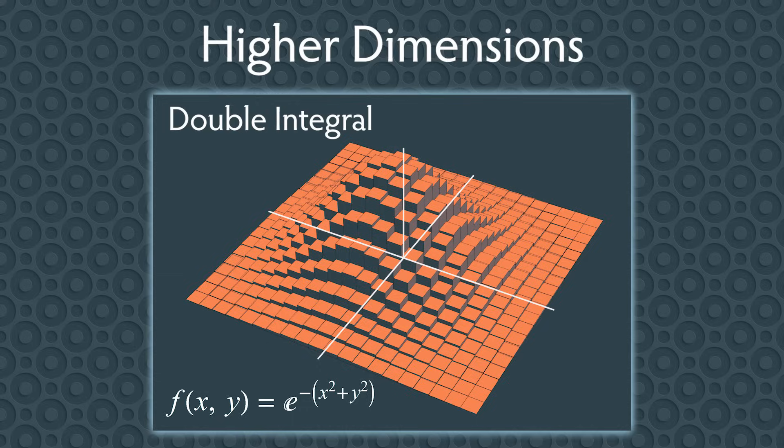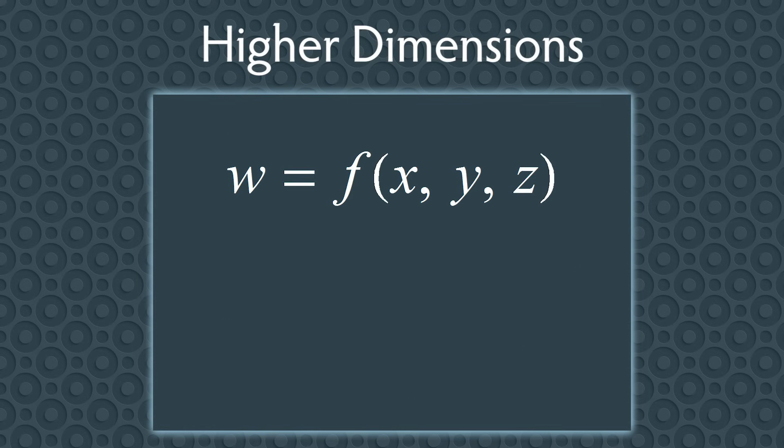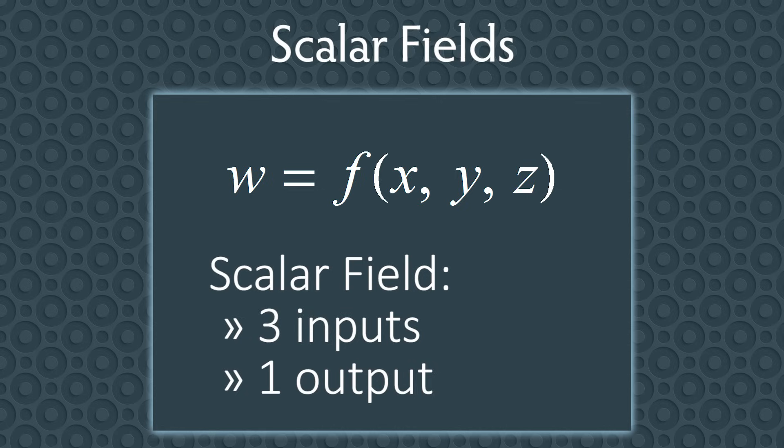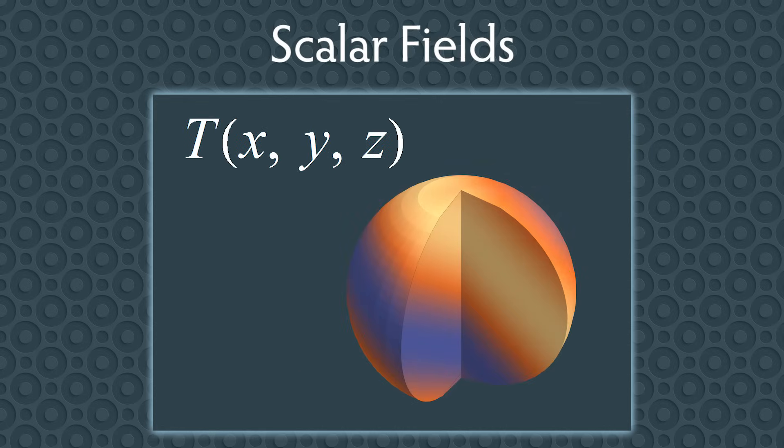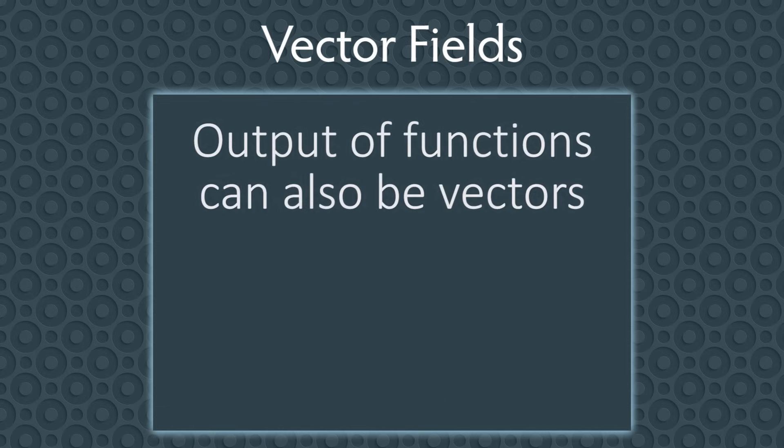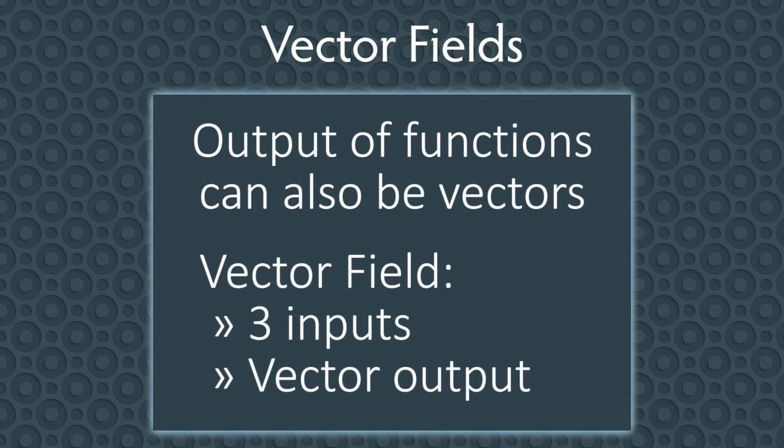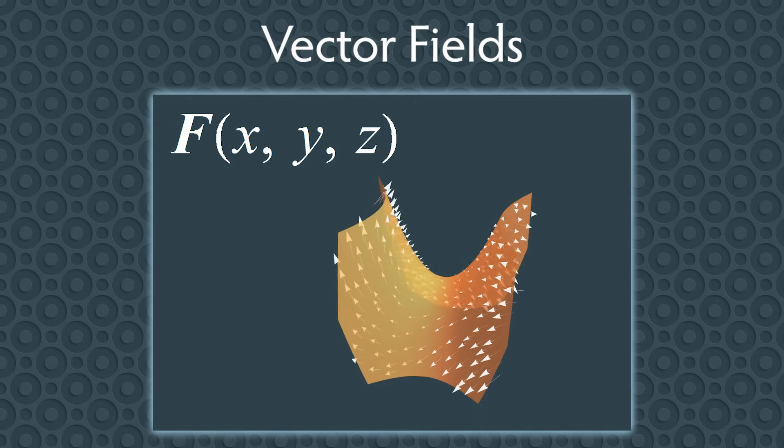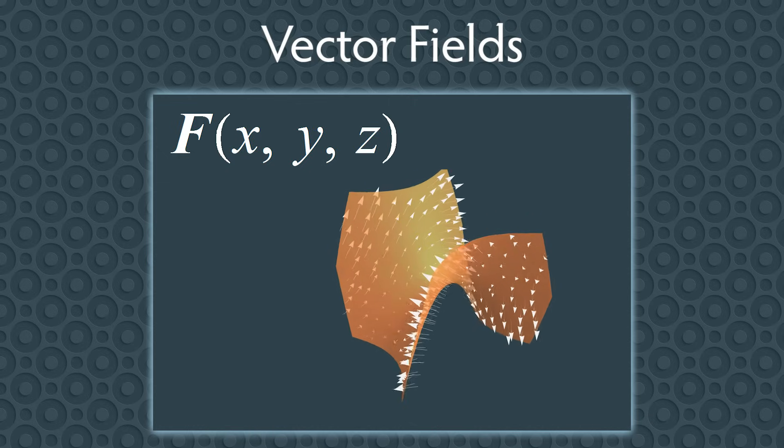But don't forget we live in three spatial dimensions, so you'll also need to learn calculus for functions with three inputs, x, y, and z. If a function has three inputs and one output, we call it a scalar field. An example would be a function returning the temperature at a given point in space. And the outputs of functions don't have to be simply numbers, they can also be vectors. A function with three inputs and a vector output are called vector fields. An example would be a function which gives the force vector due to gravity at every point in space.